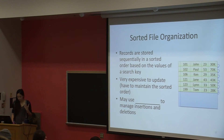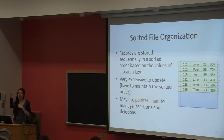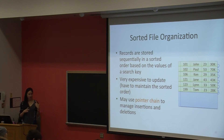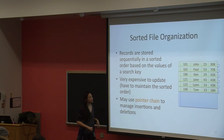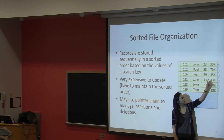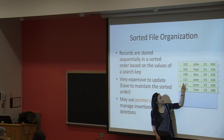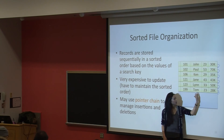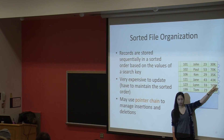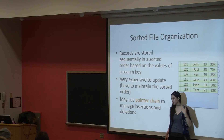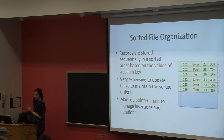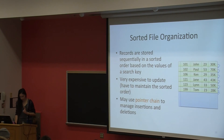For example, if we want to insert a person with ID 122 into a sorted file, we have to go through and find the position first, insert it, then move everything else. Because everything has to be in sorted order, that's why updates are expensive — and same for deletion. One way to make it not so bad is to use a pointer chain. Instead of physically shifting everything, you just add the new record and update the pointer chain so that following the chain it's still in sorted order, even if pictorially it doesn't look sorted.